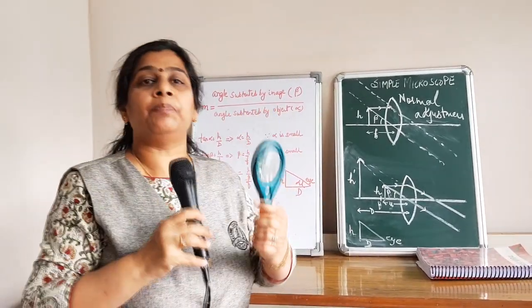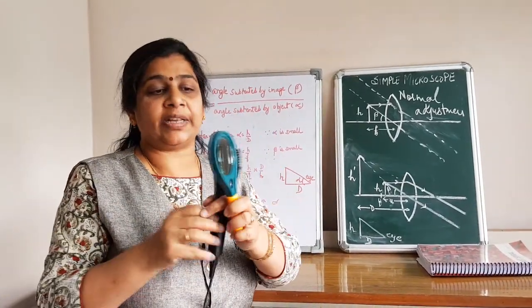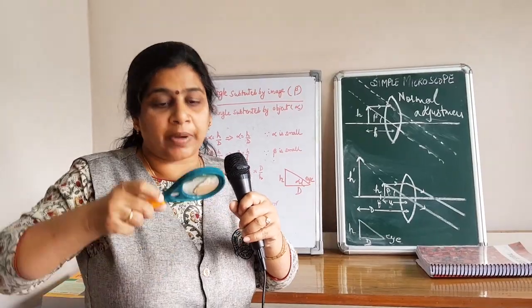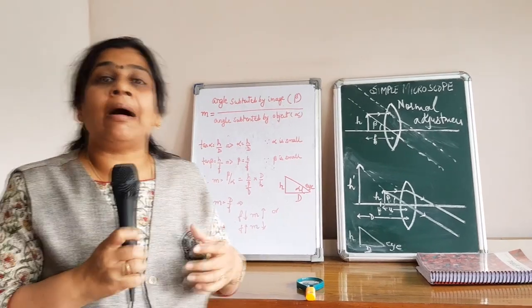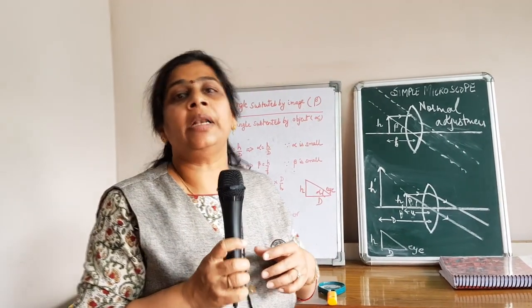What is the principle of this simple microscope? Its principle is basically that when the object is placed very close to the eye, then the image formed is highly magnified, virtual and erect.